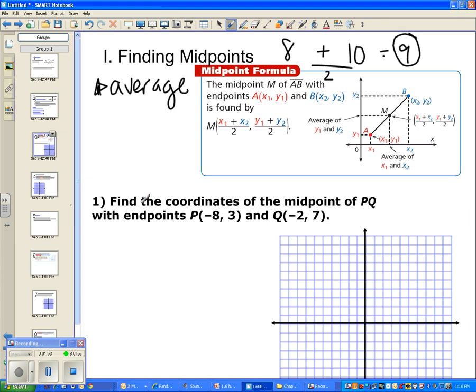Okay, so that's pretty much what we're doing with points, except we have to do it twice. We have to do it once for the x value and once for the y value, because we're going to be talking about putting it on a coordinate plane. So I'll do number one with you guys. Let's find the coordinates of the midpoint of PQ, and then it tells you what the endpoints are. So P is at negative 8, 3. Okay, so negative 8, 1, 2, 3, 4, 5, 6, 7, 8, and then up 3, 1, 2, 3.